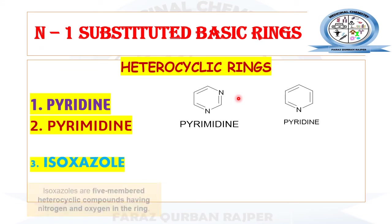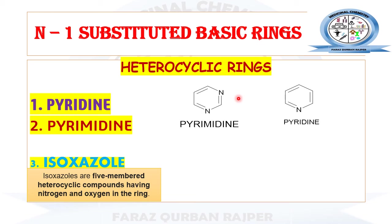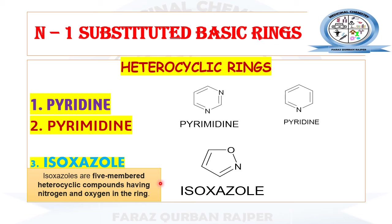The third ring is the isoxazole ring. Isoxazoles are five-membered heterocyclic rings, while pyridine and pyrimidine are six-membered heterocyclic rings. Isoxazole contains two heteroatoms — one nitrogen and one oxygen. These heterocyclic rings can be substituted at the N1 position of sulfonamide to form different derivatives with greater potency.